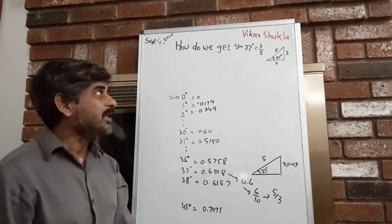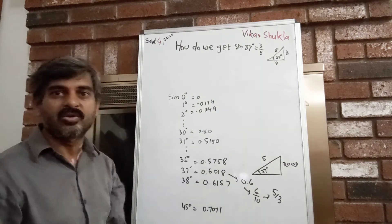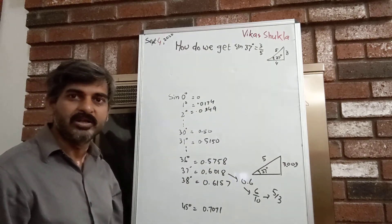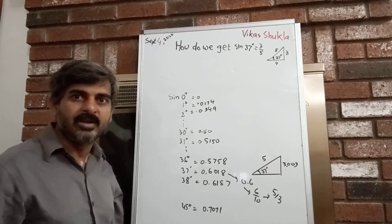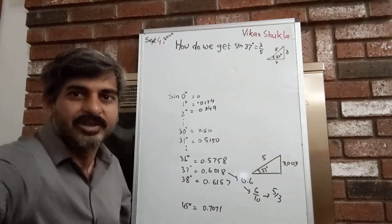That being said, I think it's fairly reasonable to assume we are very close to the actual value of sine 37°. Hope that clarifies how we got the 3, 4, and 5 numbers here.